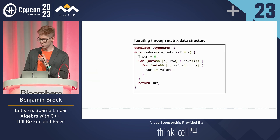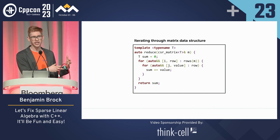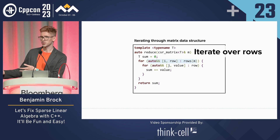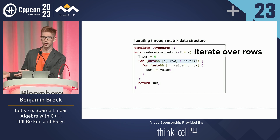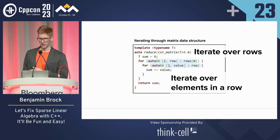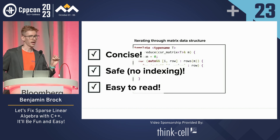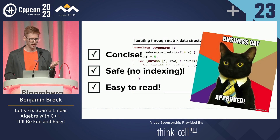Yes. There have been some proposals to do things similar to this, where you can have range adapters. Range adapters take in a data structure and then provide a view where you can iterate over that data structure. For example, we could implement a rows customization point, where we take in a sparse matrix data structure and return an iterable view of all of the rows. We can then iterate over the rows and then iterate over all of the elements in the row. This has all of the nice properties we would like — it's very concise, we clearly explain what we mean, it's not error prone, and we don't have to do any explicit indexing. It's business cat approved.